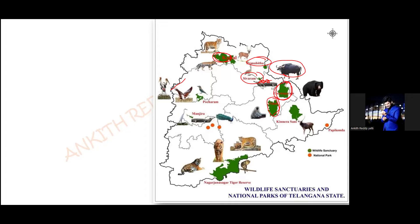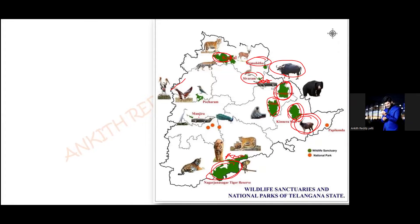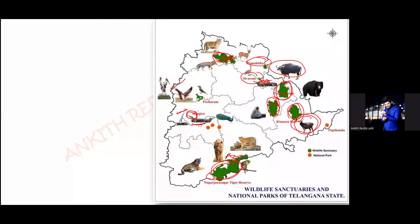Kinnerasani is famous for black buck. Amrabad Tiger Reserve is famous for tigers. Manjira Wildlife Sanctuary is famous for mugger crocodiles and migratory birds as well. Pocharam is famous for migratory birds — it is basically a wetland.